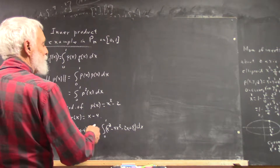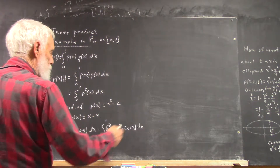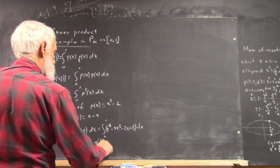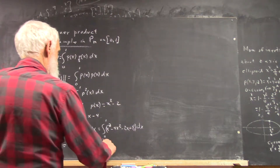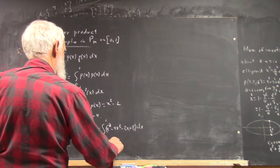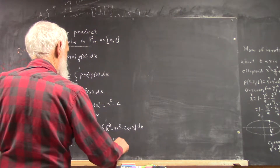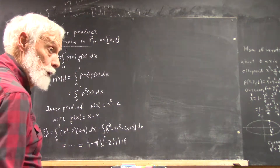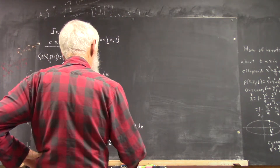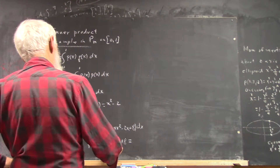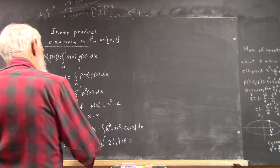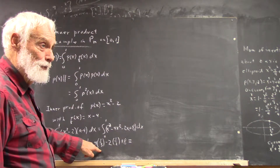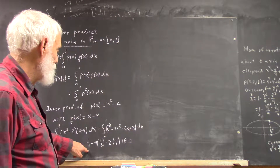That's going to give you x to the fourth over 4. At 0 you're going to get 0. At 1, x is going to be 1. You're going to have 1 fourth. Then it's minus 4 times 1 third, because the integral of x squared from 0 to 1 is 1 third. Minus 2 times 1 half. Plus 8.